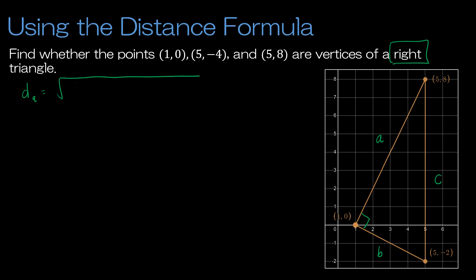So for the distance of A, I have to subtract the X values. So I'm going to take (5 - 1)² + (8 - 0)². That gives me the square root of (4)² + (8)². So that gives me the square root of 16 plus 64. So that is the square root of 80. Now could I reduce that? Yes, I could. Would I turn it into a decimal? No, I wouldn't. For now, I'm going to leave this just like that.